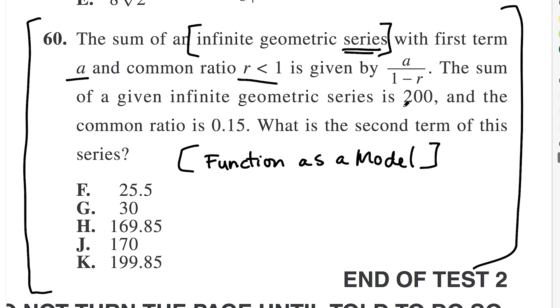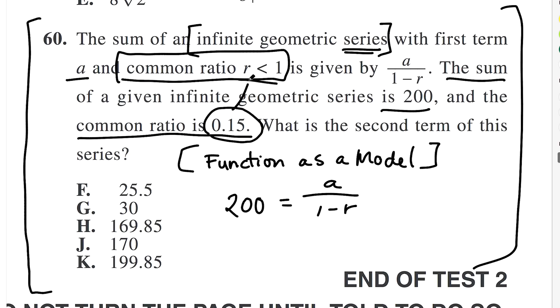So let's first start with this equation or expression that we're given and we're going to fill in what we know. So what we know is the sum is 200, so I'm going to say 200 equals a over 1 minus r. And then I know that the common ratio is 0.15 and this is common ratio r is less than 1, so 0.15 is r. And so that goes right here. So I can say that equals a over 1 minus 0.15.